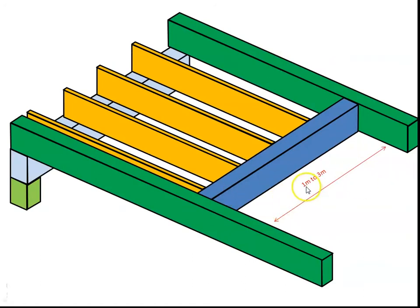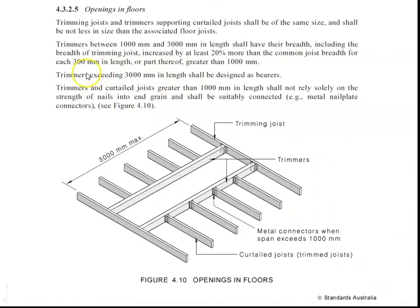While we're here you might have the question, what happens if our trimmer is longer than three metres long? Well that's this line here. Trimmers exceeding three metres shall be designed as bearers. That means you have to go to a different span table and you can't call it a trimmer anymore. It's got to be called a bearer and you size it using a different table.